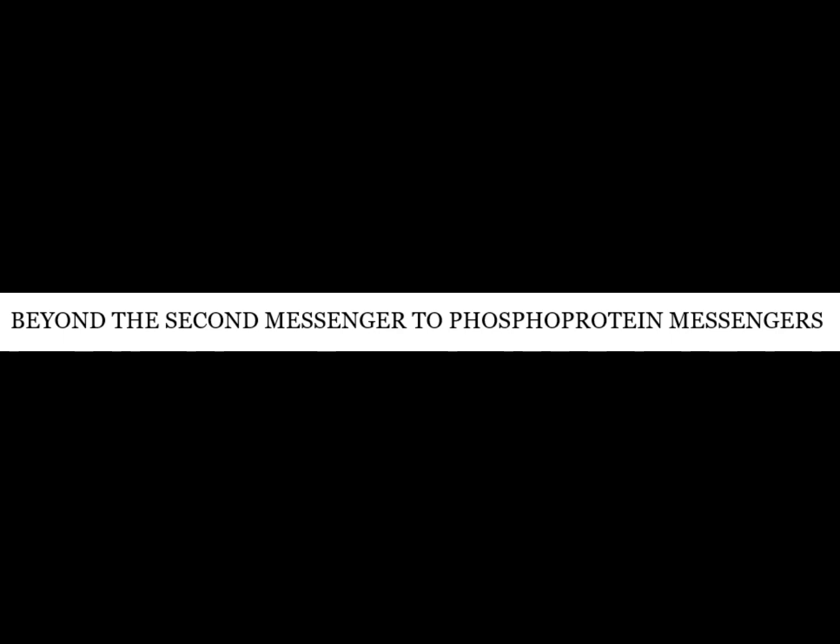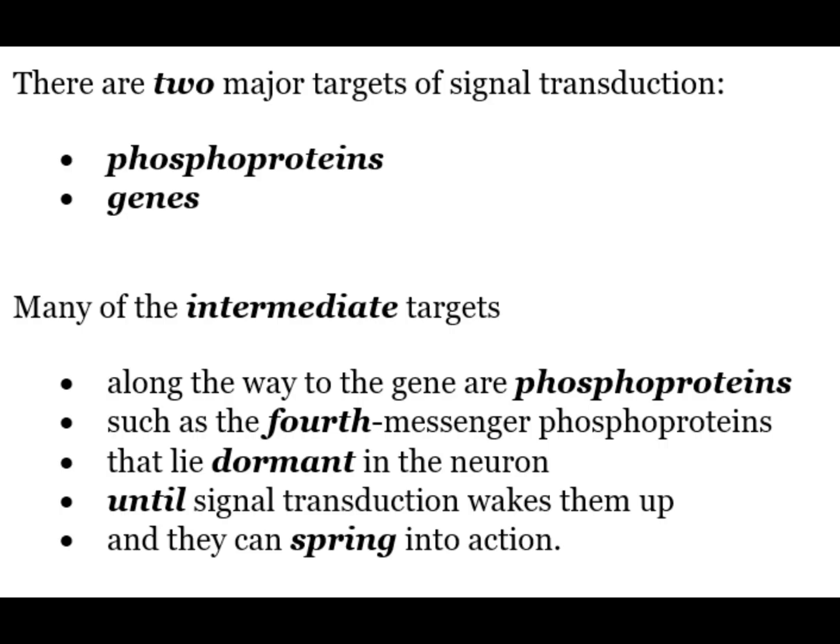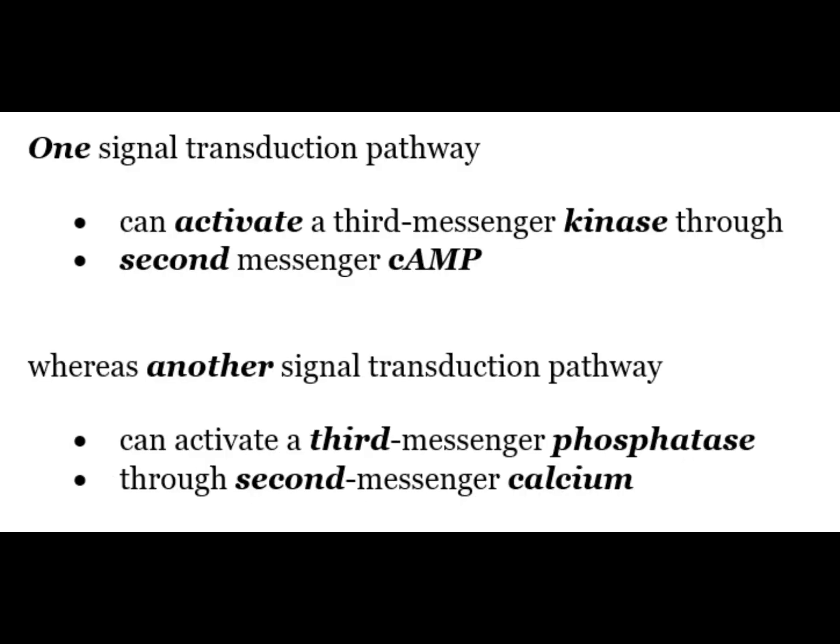There are two major targets of signal transduction: phosphoproteins and genes. Many of the intermediate targets along the way to the genes are phosphoproteins that lie dormant in the neurons until signal transduction wakes them up. One signal transduction pathway can activate a third messenger kinase through second messenger cyclic AMP, whereas another pathway can activate a third messenger phosphatase through second messenger calcium.